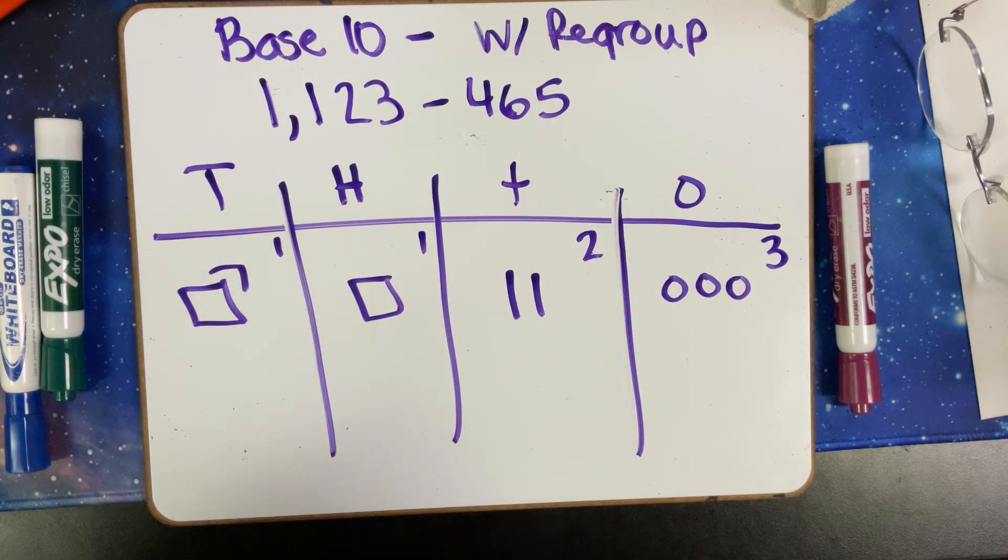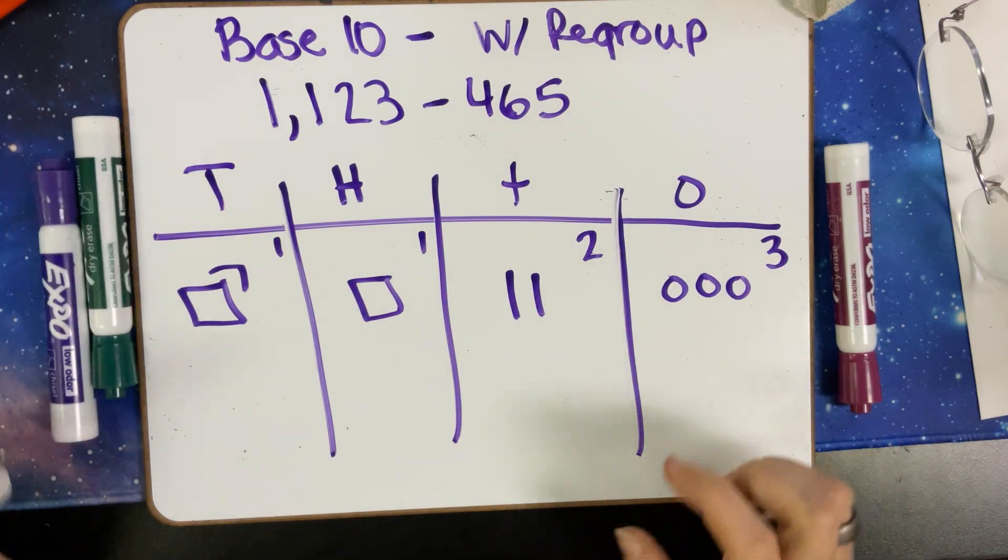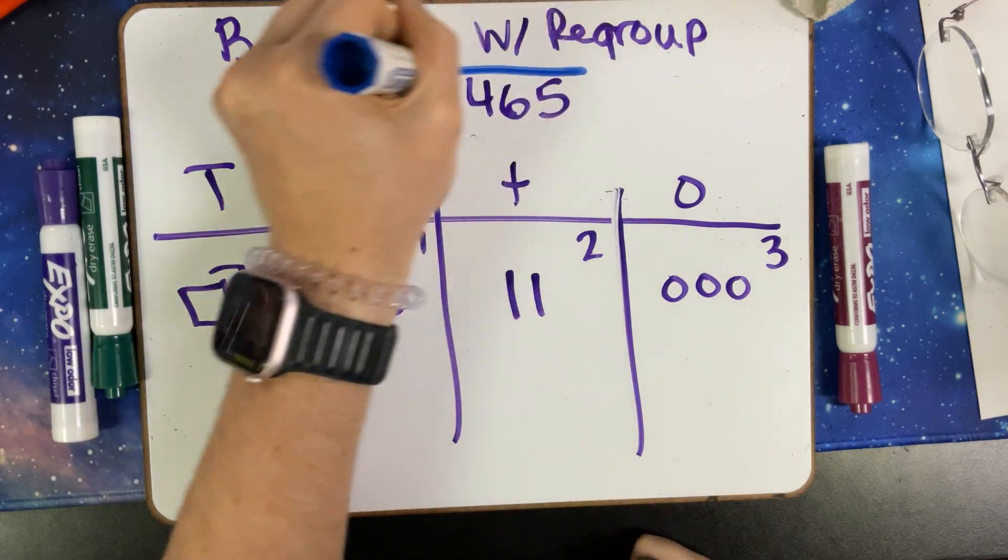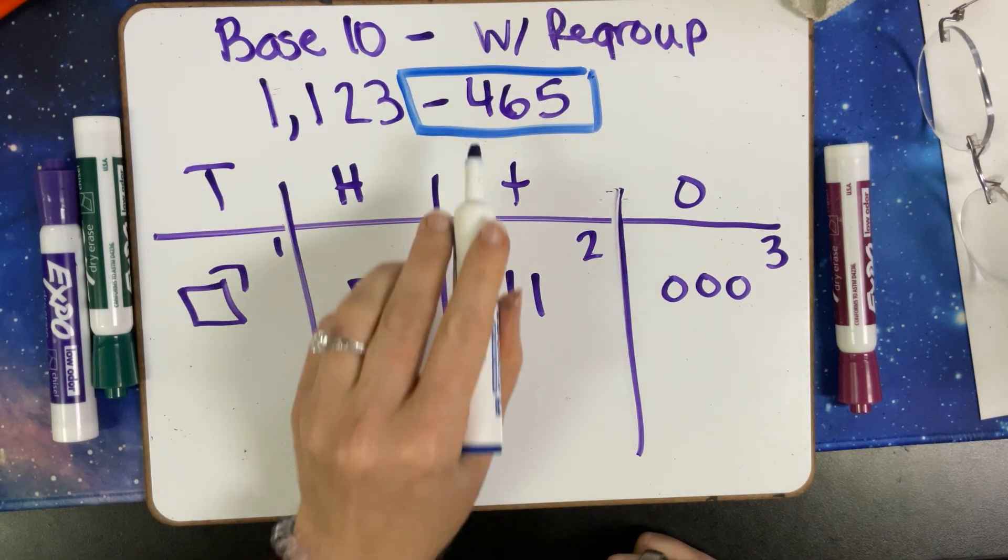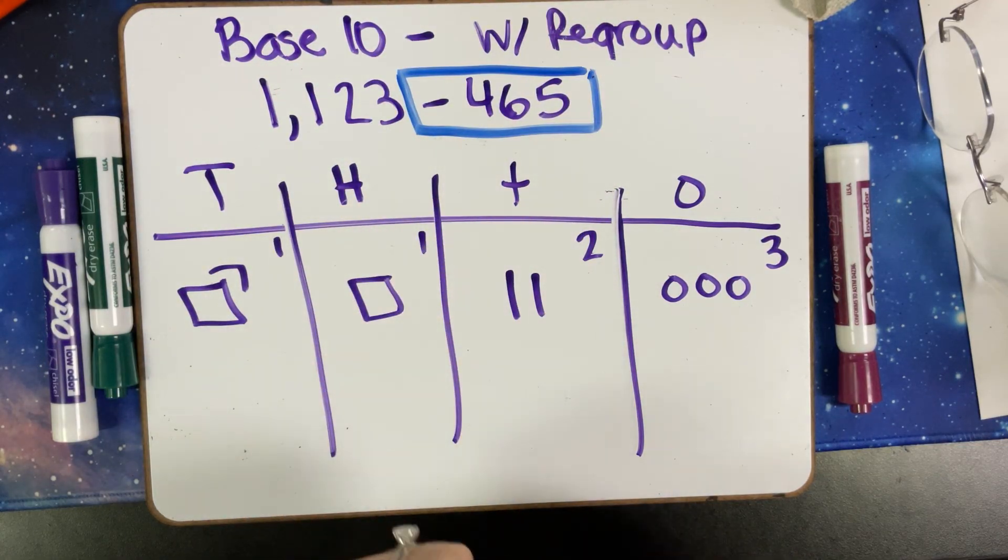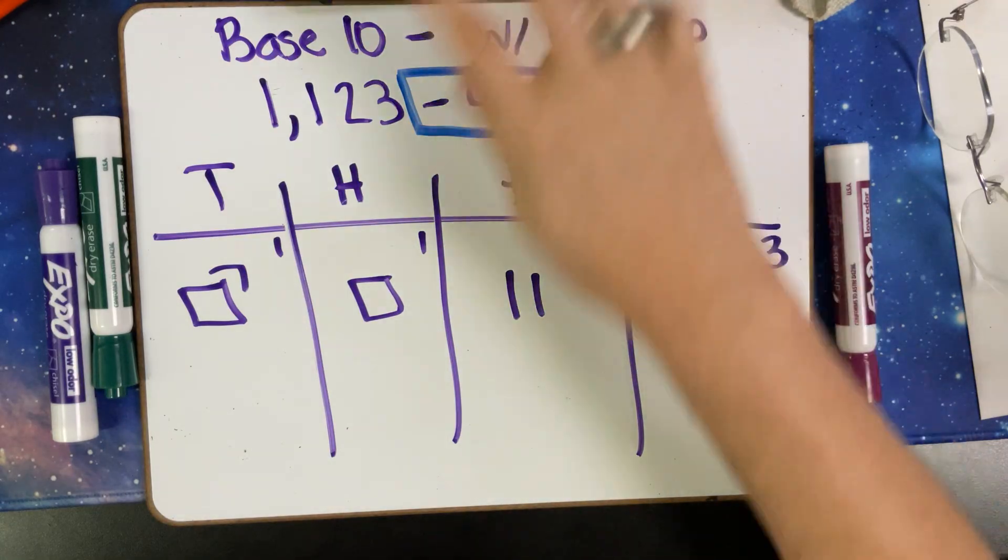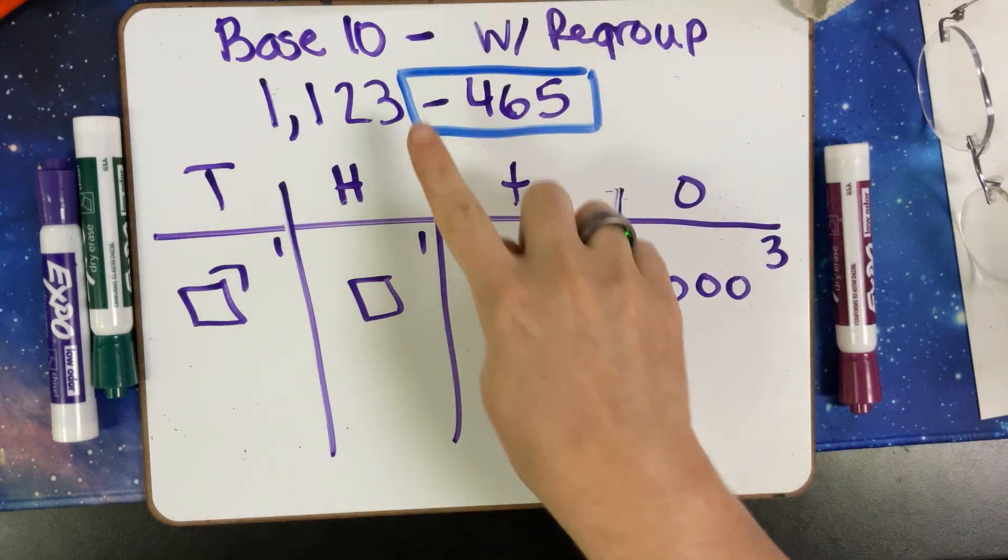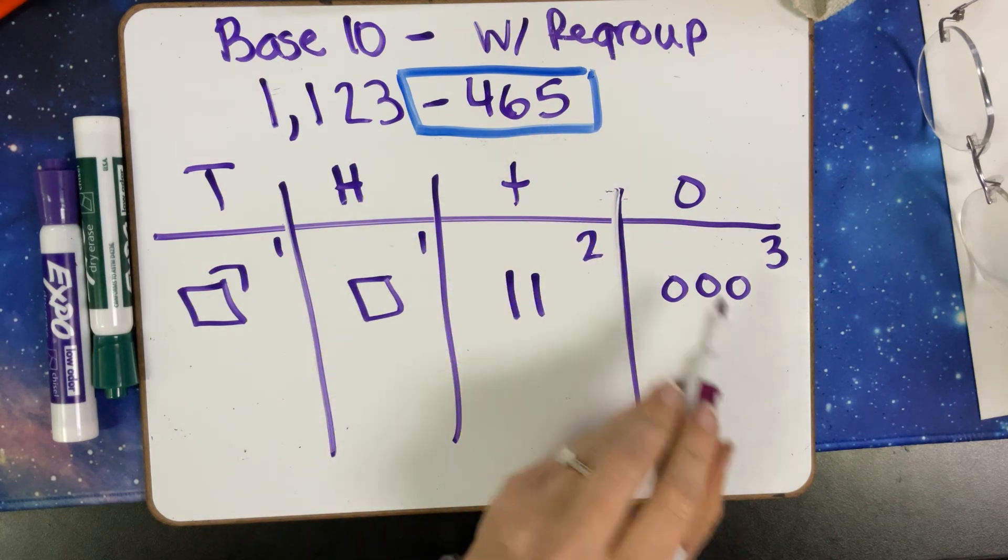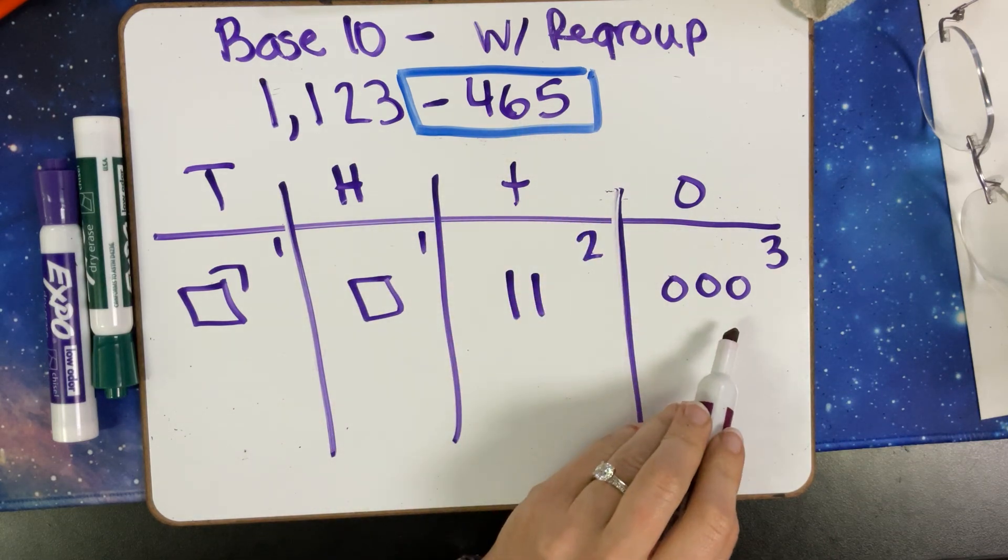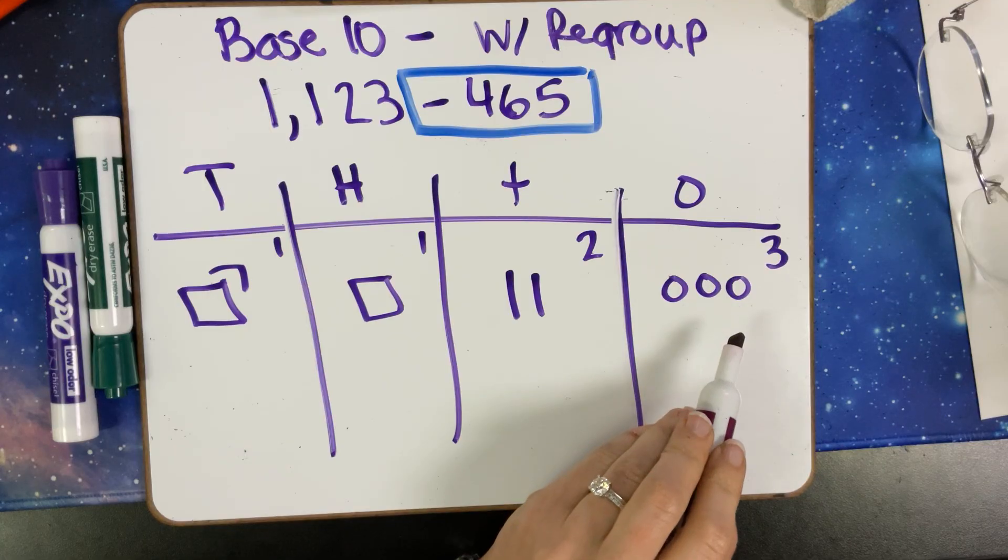What I always tell the kids to do is first we're going to see if those numbers make sense. We're going to square to see what we're subtracting. I'm going to do it in this blue color. First, I'm going to see if I can subtract. I have five up here. Can I give them five? My answer is no.